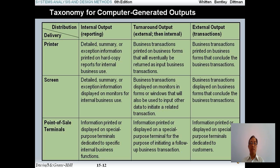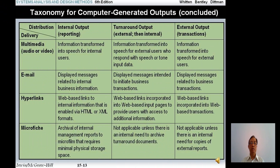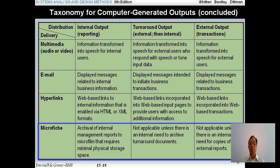There is a taxonomy for computer-generated output. You have a table with columns and rows, and the intersection between column and row in Excel contains the detail of the report. For example, for a printer and internal output it means a detailed summary of exceptions — a copy report for internal business use. You can have many types of external outputs. You can use email for internal output reporting, displaying messaging related to internal business information, or use microfiche for turnaround output. Please study this table to select a good delivery method for your output.